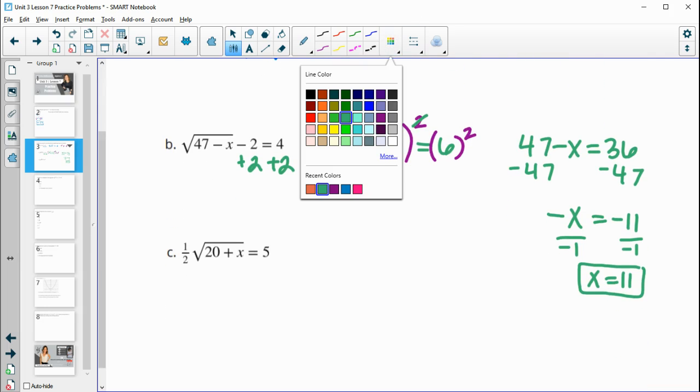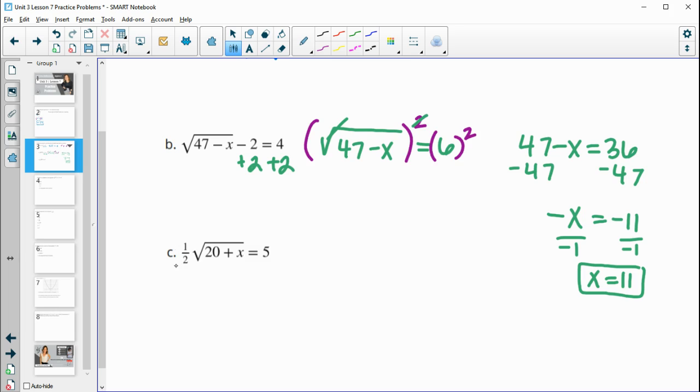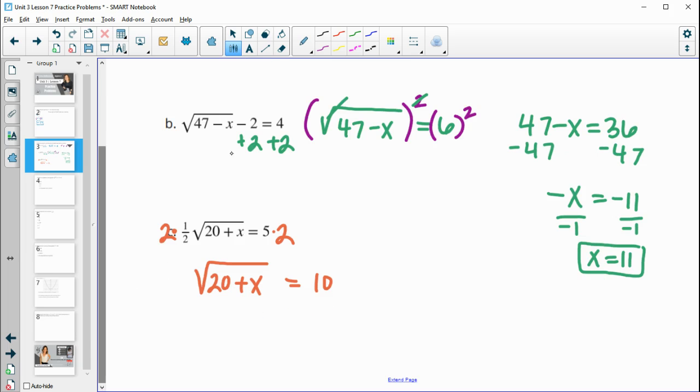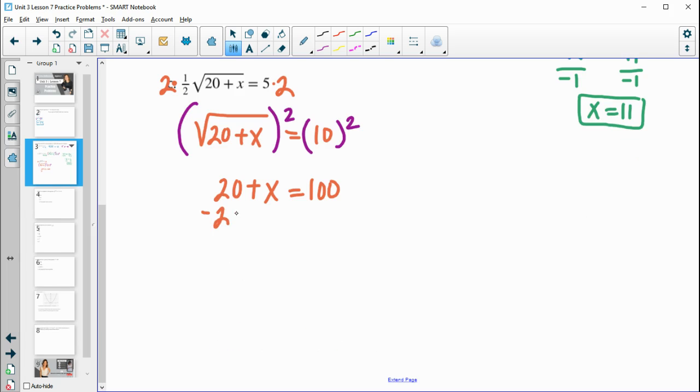And then for part c. So we again want to isolate the square root. So we're going to want to undo this one half, which means that we'll multiply both sides by 2. Because 2 times a half is just 1. So then we just have the square root of 20 plus x. And that's equal to 10. So then we will undo this square root by squaring both sides. And we end up with 20 plus x equals 10 squared, which is 100. So then we can just subtract 20 from both sides, because 20 minus 20 is zero, plus x is just x. And then 100 minus 20 is 80.